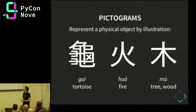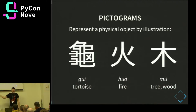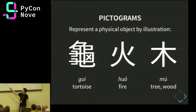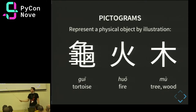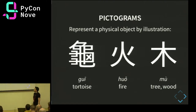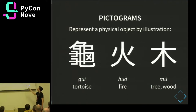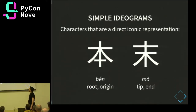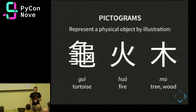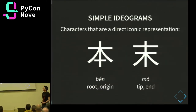These are pictograms. This Chinese character represents a tortoise or turtle — these are supposed to be the legs, this is the shell on the back, this is the tail, and this is the head. Even if you don't know what it means, with a bit of fantasy you can guess it might be a tortoise. This character is the Chinese character for fire — it looks like a fire burning. And this one represents a tree — like a Christmas tree with a trunk in the middle and branches going down.